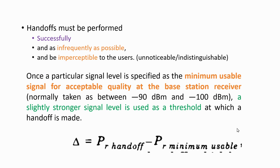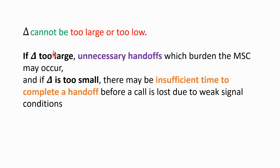The threshold value delta: handoff threshold PR_handoff minus the minimum usable signal equals delta. The difference between the handoff threshold and the minimum usable received power at the cell border is called delta. Delta cannot be too large or too small. If delta is too large — for example, if the minimum detectable signal at the cell border is minus 90 dBm and delta is set at minus 50 dBm — a lot of unnecessary handoffs will take place within the cell itself.